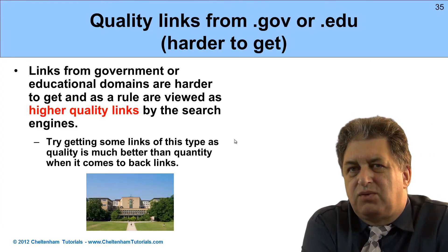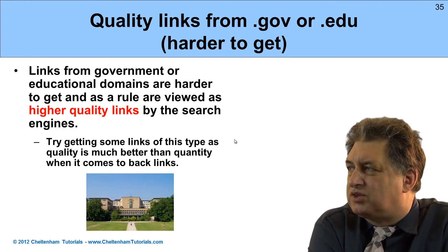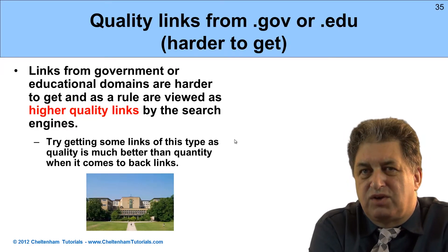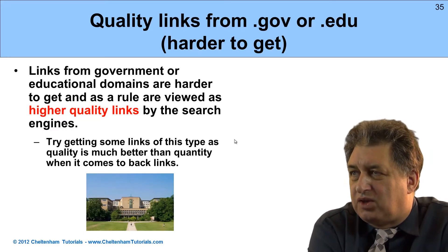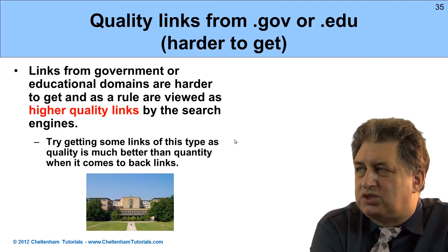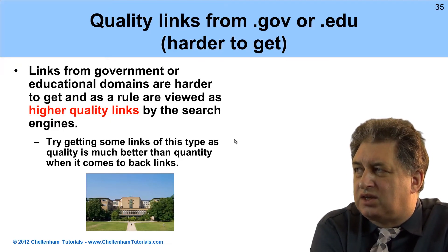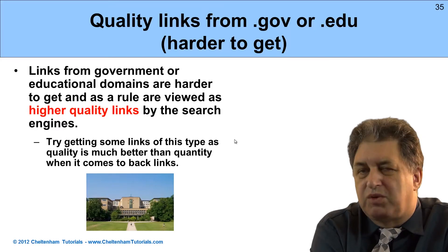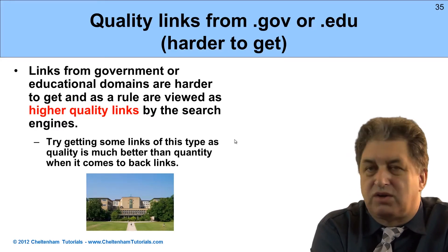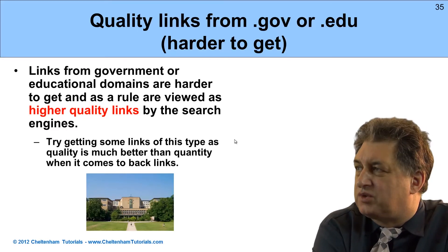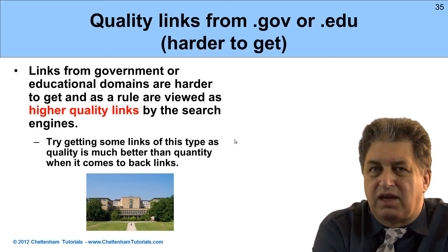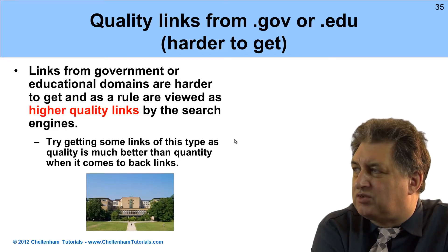Quality links are what you really need. Things like .gov and .edu are government or educational website extensions. These are quite hard to get links from — you can't simply buy links from there. You should try to put some time in to get a link from these sorts of sites if possible. A .gov extension requires proof that it's a government website, and EDU websites generally require you to actually be an educational institution. They tend to have strict rules about external linking, so if you can get a link from these sorts of domains, so much the better.